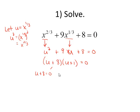If u plus 8 equals zero, then I know that u is equal to negative 8 by subtracting 8 on both sides.